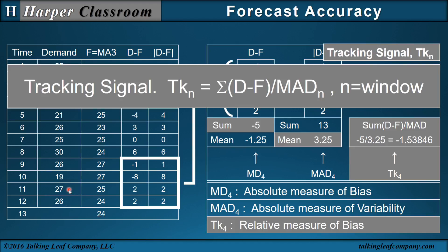For this time series — 26, 27, 19, 26, 30 — the mean deviation is minus 1.25 and the tracking signal is minus 1.53846. But if the time series was 26 million, 27 million, 19 million, 26 million, 30 million, then the mean deviation would be minus 1.25 million, but the tracking signal would still be minus 1.53846. The magnitude of the time series is reflected in the mean deviation but not the tracking signal. The tracking signal is a relative measure of bias, and its value will range between plus or minus 4, which is our window.